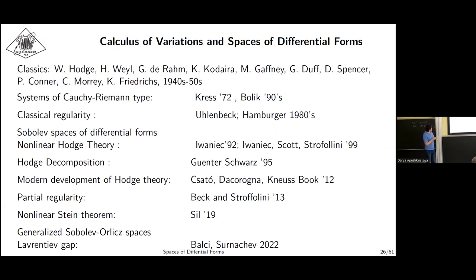Some classical references. Classical theory of forms was studied by Hodge, Weyl, de Rham, Kodaira, Gaffney, Duff, Spencer, Morrey, Friedrichs. Then there were of course a number of later works. These are interesting as application to calculus of variations. In classics everything was linear, and later people developed non-linear analogs of Hodge theory, studied partial irregularity. This is quite an active field.